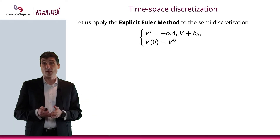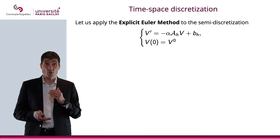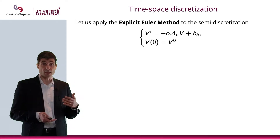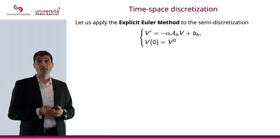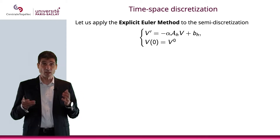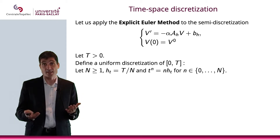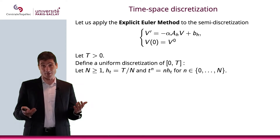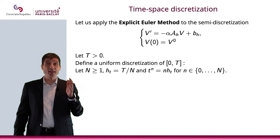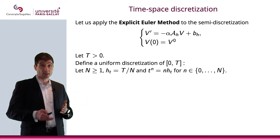What we're going to do is apply the explicit Euler method to this problem, which comes from the semi-discretization in space. So what I'm going to do now is discretize the time domain — it's about time, right, no pun intended. So let T be a positive number.